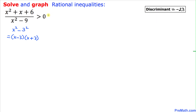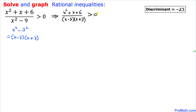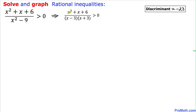So we can write this inequality with x squared plus x plus 6 on top, which is not factorable so we leave it alone, and the denominator factored as x minus 3 times x plus 3, which is greater than 0. I am going to call this inequality i, where i stands for inequality.